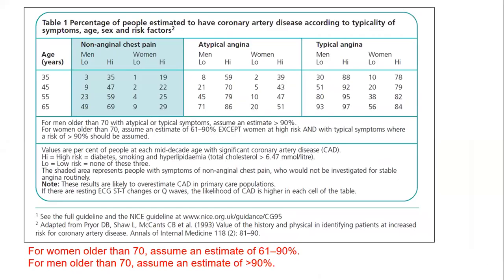Some classifications, like those from NICE in the UK, add risk factors into the categories, raising the likelihood of coronary artery disease in those with risk factors. This is a different classification system for pre-test probability. In our case — a woman older than 70 — the estimate is like 61 to 90 percent based on this different classification.